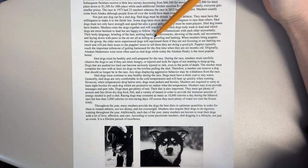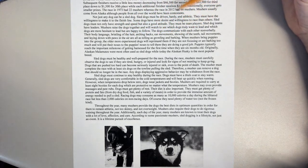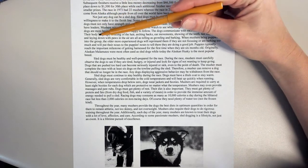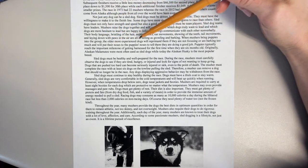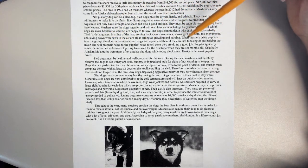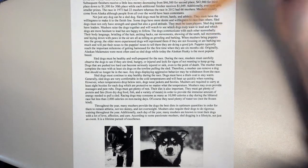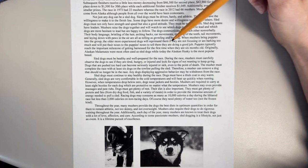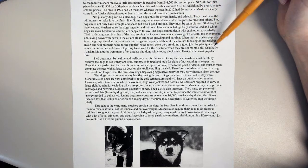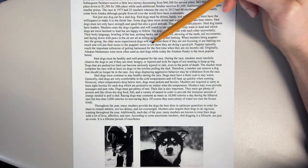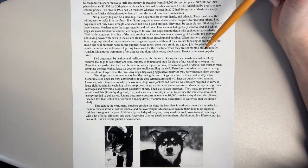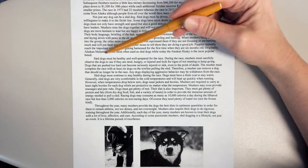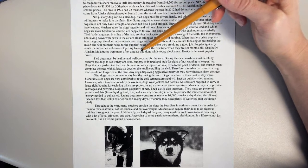When mushers bring puppies into the group, the older, more experienced dogs will reprimand them if they are not focusing or are barking too much, and will put their noses to the puppies' noses to tell them they are doing a good job. Puppies typically reach the important milestone of getting harnessed for the first time when they are six months old. Originally, Alaskan Malamutes were most often used as sled dogs, while today the Alaskan Husky is the most popular breed.